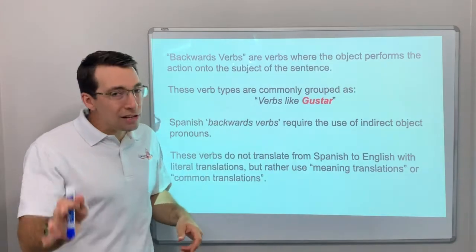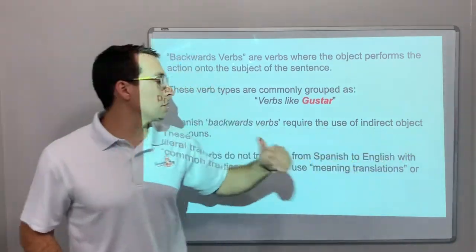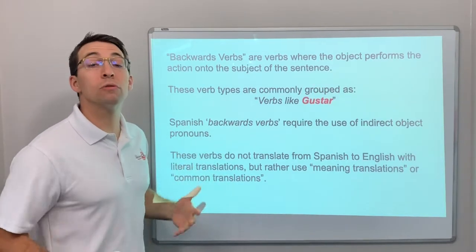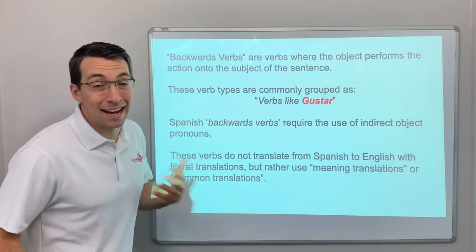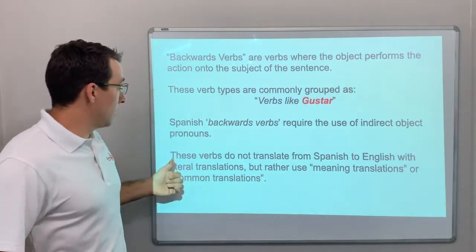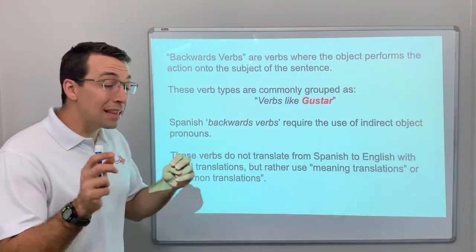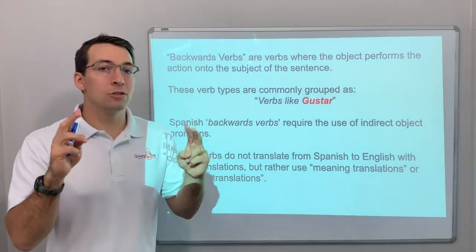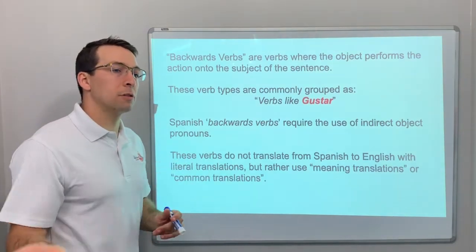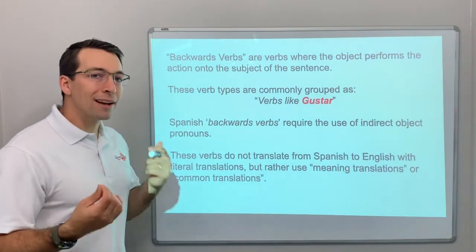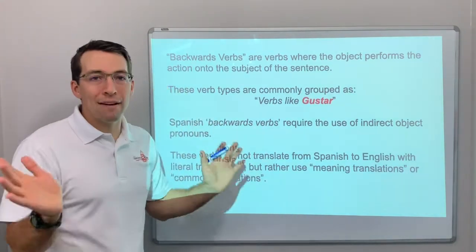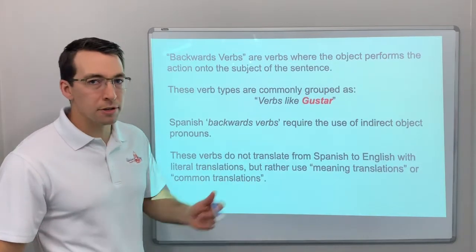Spanish backwards verbs require the use of indirect object pronouns — you have to use an indirect object pronoun. That is what tells you who is receiving the action: who likes, I like, you like, she likes, we like, maybe they like. These verbs do not translate from Spanish to English with literal translations, but rather they use meaning translations, common everyday translations.